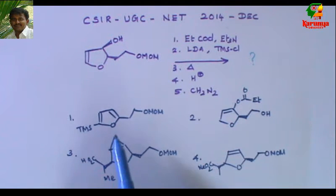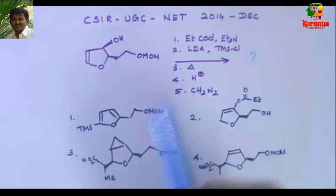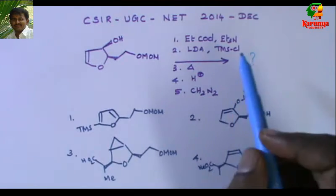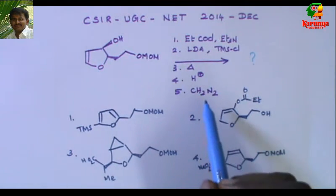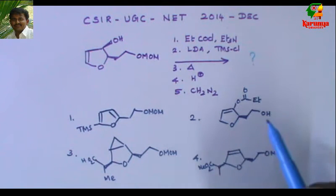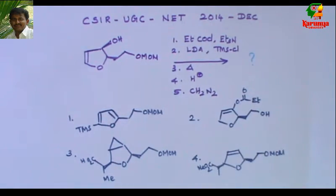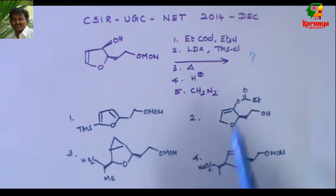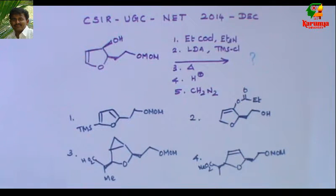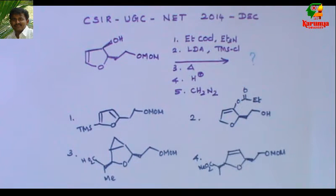The given options are: first, a furan derivative where the propionyl part is missing and TMS chloride has been added; second, the propionyl part is present but the double bond has migrated; third, a cyclopropanation product with some rearrangement; fourth, a rearrangement where the alcohol is missing, the propionyl part is present, and it is an ester rather than an acid.